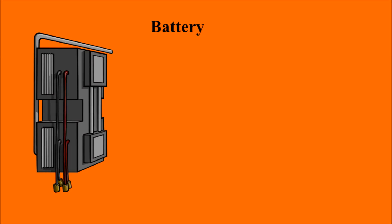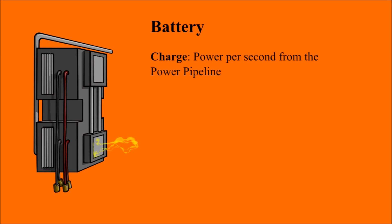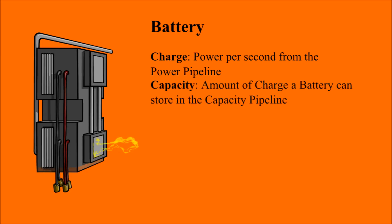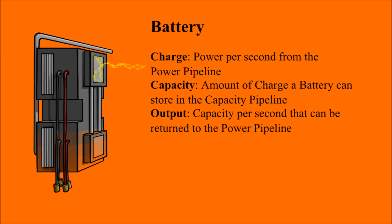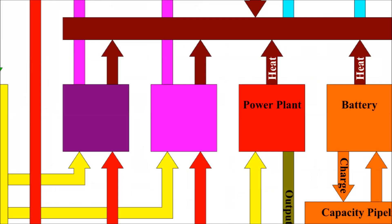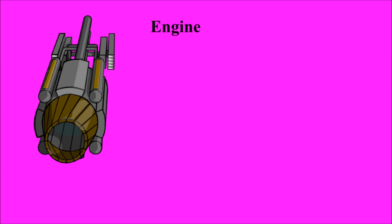Batteries collect excess power from the power pipeline and store it for later use. This is called charge. The value for charge is the power per second the battery can convert to capacity. The value for capacity is the amount of power from the ship's power pipeline the battery can charge. Capacity is stored until the power pipeline needs more power, at which time a battery can convert its capacity into output and return it to the ship's power pipeline. The battery's value for output is how many units of power it can supply to the power pipeline from capacity per second. Batteries only create heat when they are charging. The value for a battery's heat is how much heat per second it creates while using its maximum charge. Batteries have no spin because they don't have a lot of moving parts.